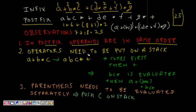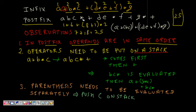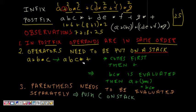We observe that in the input, plus comes before star, but in the postfix output, star comes before plus — this is the LIFO magic of a stack. For example, a plus b into c becomes a b c star plus — star comes first, then plus. Parentheses require special care: push the left parenthesis on the stack and push everything until the matching right parenthesis is found.